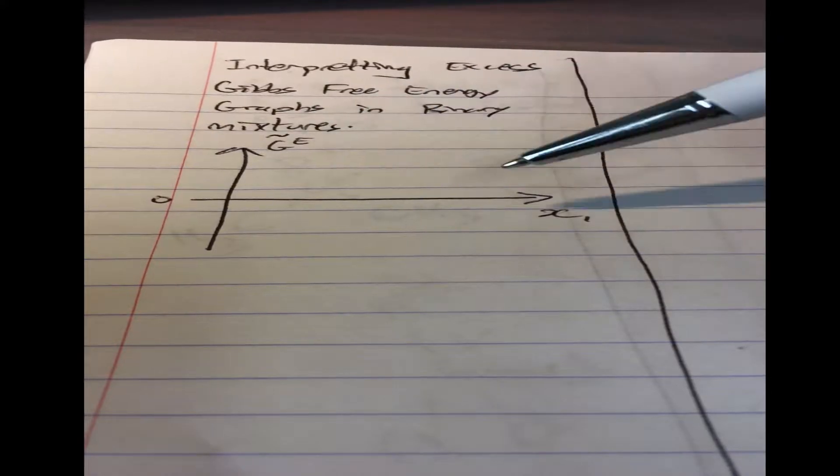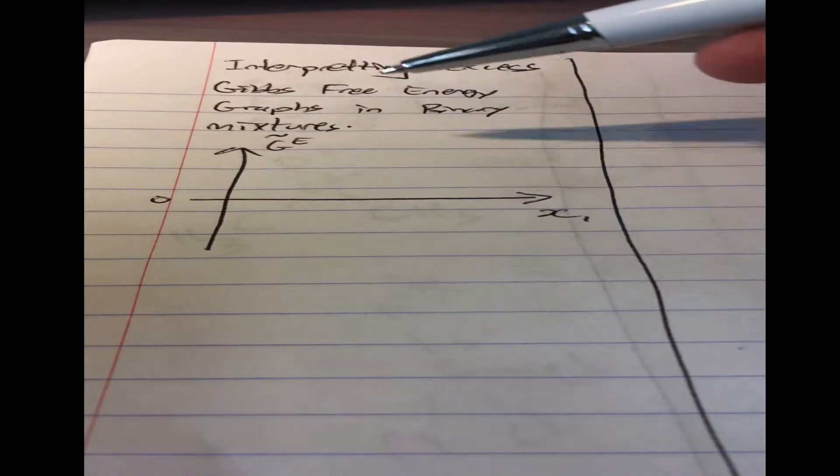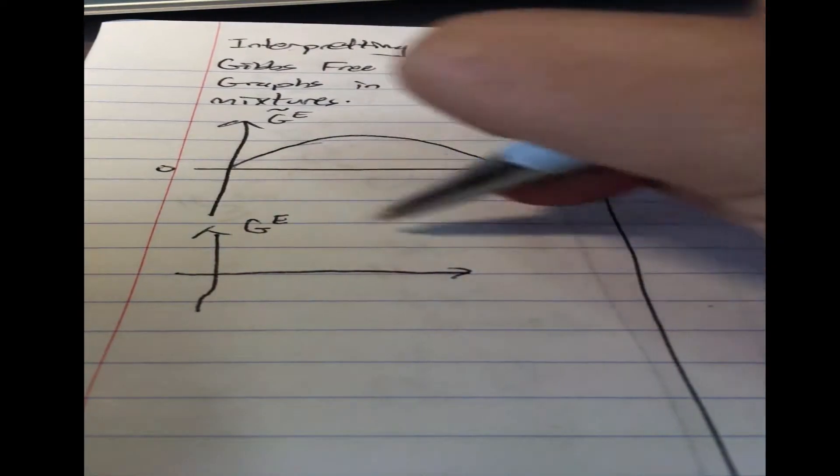Hey everybody, hope you're alright. Today I just want to explain the concept of how to interpret Gibbs free energy graphs. So let's say you have two components, component 1 and component 2, and you see this excess Gibbs free energy as the y-axis and the molar fraction of one of the components as the x-axis. And you might see something like this, or sometimes even like this — so you have the excess Gibbs free energy here.